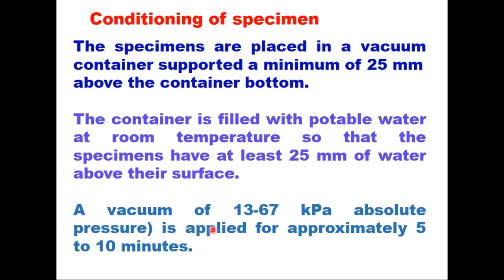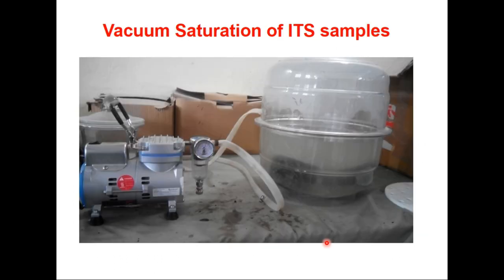Conditioning of specimens is done as follows. The specimens are placed in a vacuum container supported a minimum of 25 mm above the container bottom. The container is filled with potable water at room temperature so that the specimens have at least 25 mm of water above their surface. A vacuum of 13 to 67 kPa is applied for approximately 5 to 10 minutes. This is how vacuum saturation of ITS samples is done.